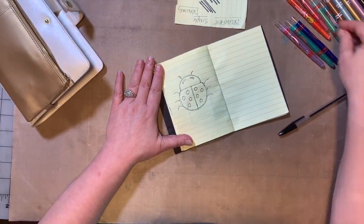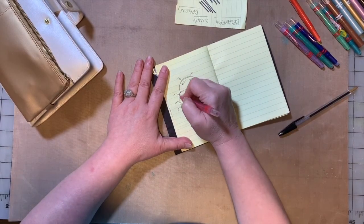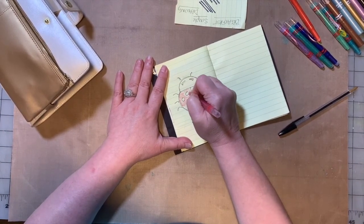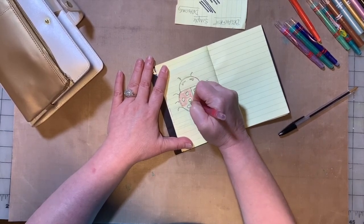Okay, then we're going to take our red crayon and we're going to make all the spots, the parts around the spots on her wings, red.